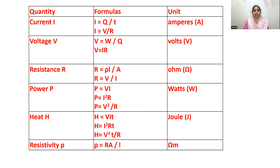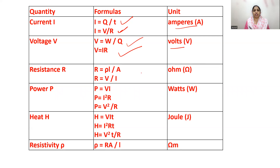Summary of important formulas: Electric current — I equals Q by T, and I equals V by R. The unit is Ampere. Potential difference — V equals W by Q, and V equals IR. The unit is Volt. Resistance — R equals Rho L by A, and according to Ohm's Law, R equals V by I. The unit of resistance is Ohm.